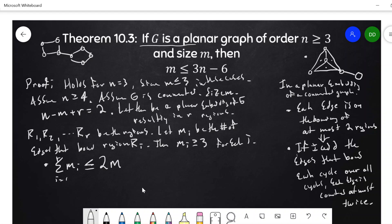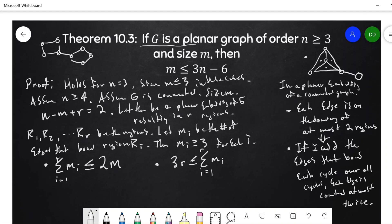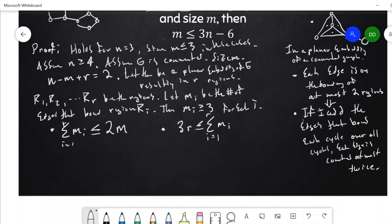I also know that the sum of these number of edges, since each m sub i is at most three, we also have that three times the number of regions, so that's i equal one to r is at most this sum of the m sub i's.